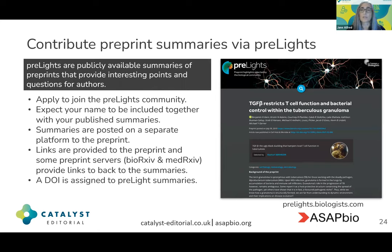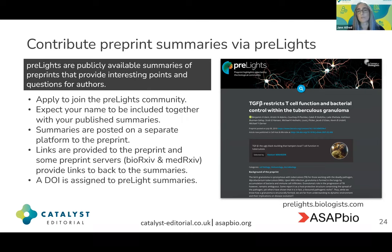You can also contribute summaries called PreLights to the PreLights platform, hosted by the Company of Biologists. PreLights are publicly available summaries of preprints that provide interesting points and questions for authors, written in an easy-to-read way. To apply to join the PreLights community, you need to contact PreLights. Your name will be included with your published summaries. Summaries are posted on a separate platform to the preprint itself, but links are provided to the preprint from your PreLights summary, and some preprint servers provide links back to the summaries. A DOI is also assigned to PreLights summaries, making them both discoverable and citable.